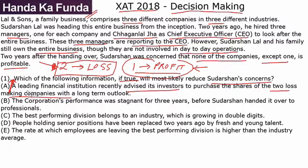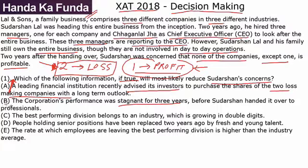In decision making, never mark an answer until you have gone through all options. Option B: The corporation's performance was stagnant for three years before Sudarshan handed it over to professionals. This talks about the entire corporation being stagnant — we do not know whether it was at a steady profit or a steady loss. This is of no use.